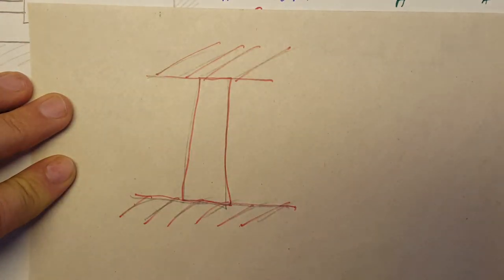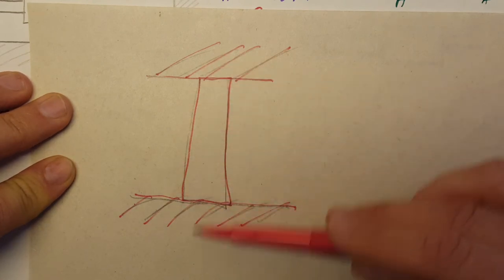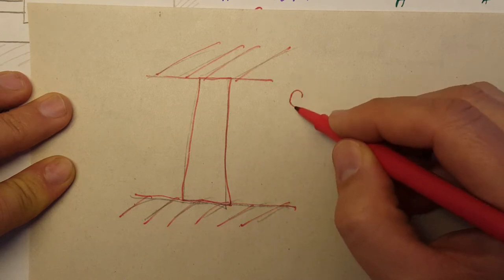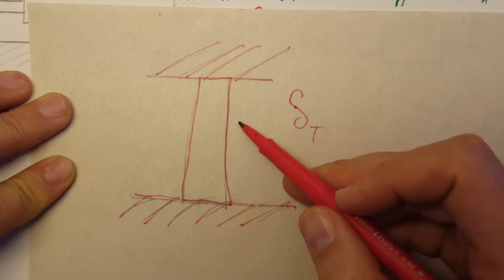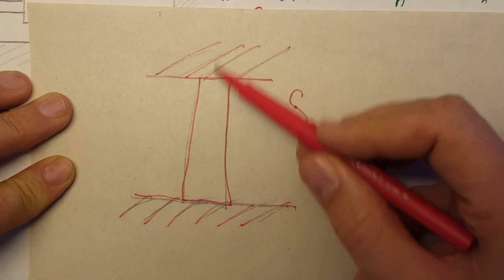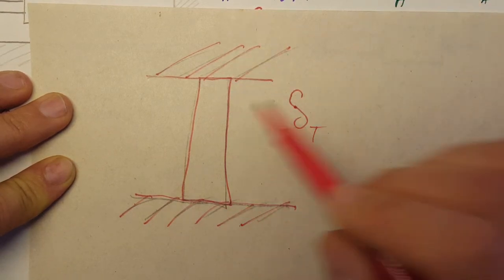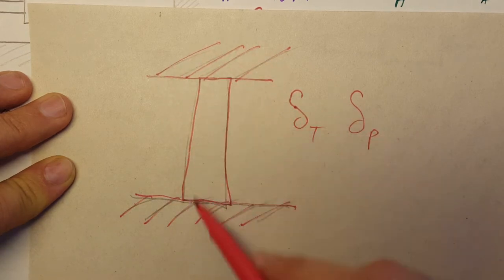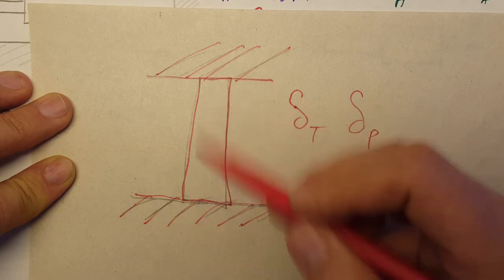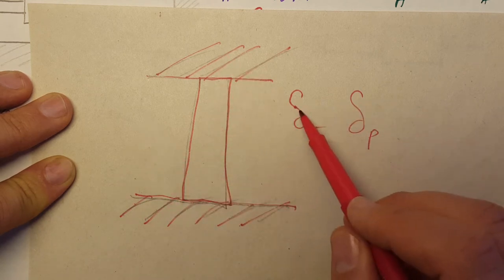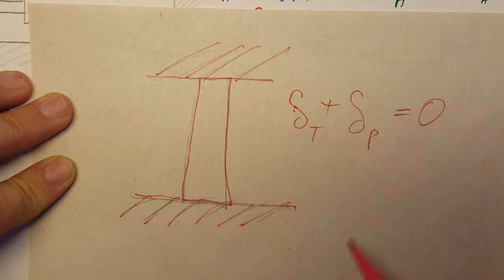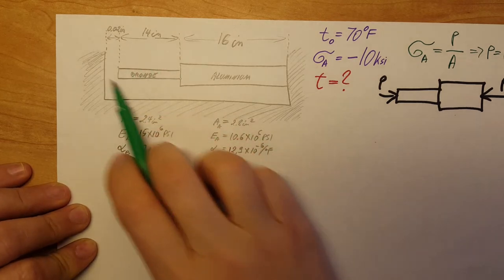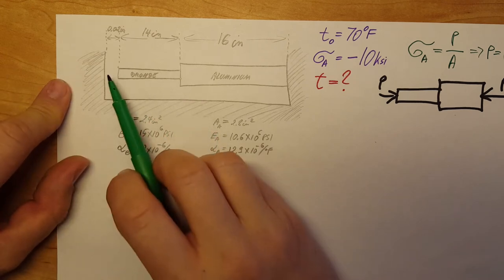Consider a metal piece held between two walls. If we heat it without the walls, it would expand due to the heat. If we apply a force, the material deforms due to that force. But when the walls hold the piece fixed, it can neither expand nor contract — therefore whatever thermal expansion or force deformation occurs, the total change in length equals zero. We'll rely on the same idea here, though it's slightly trickier.